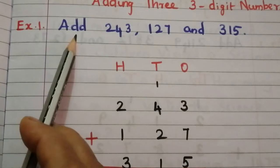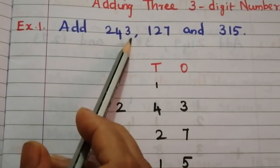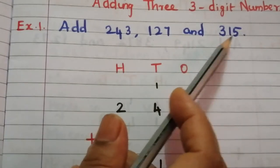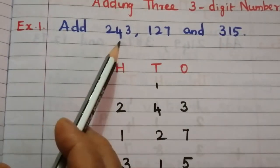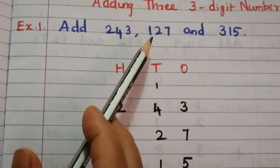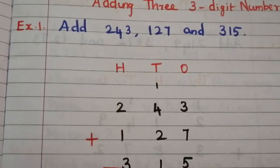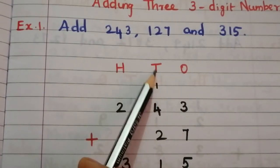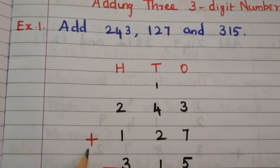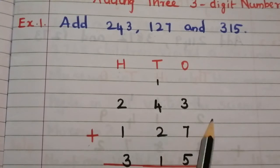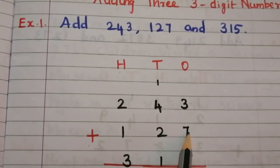Example 1: Add 243, 127, and 315. To add these three numbers, we have to write them vertically. Then put ones, tens, hundreds, and a plus sign.